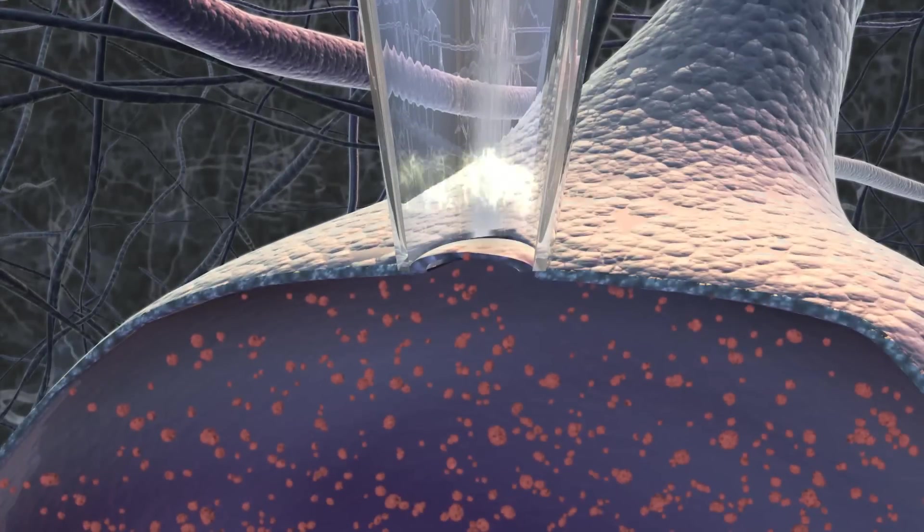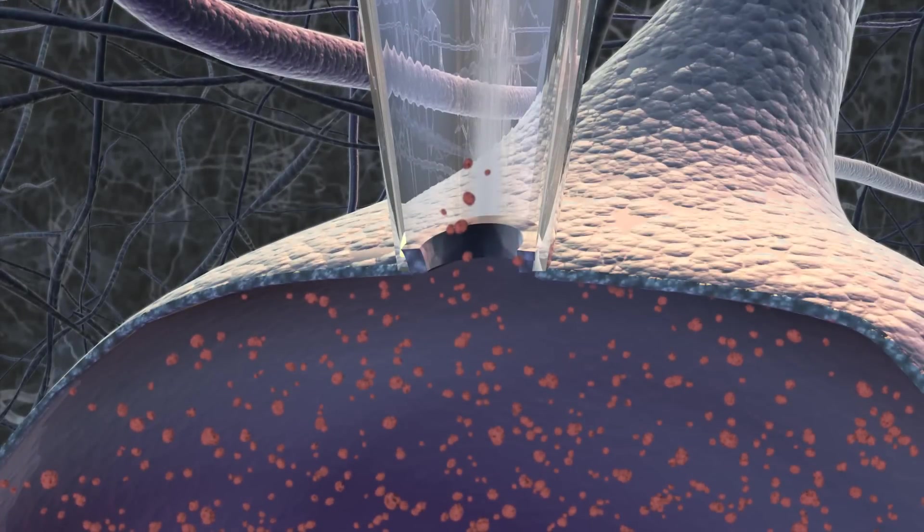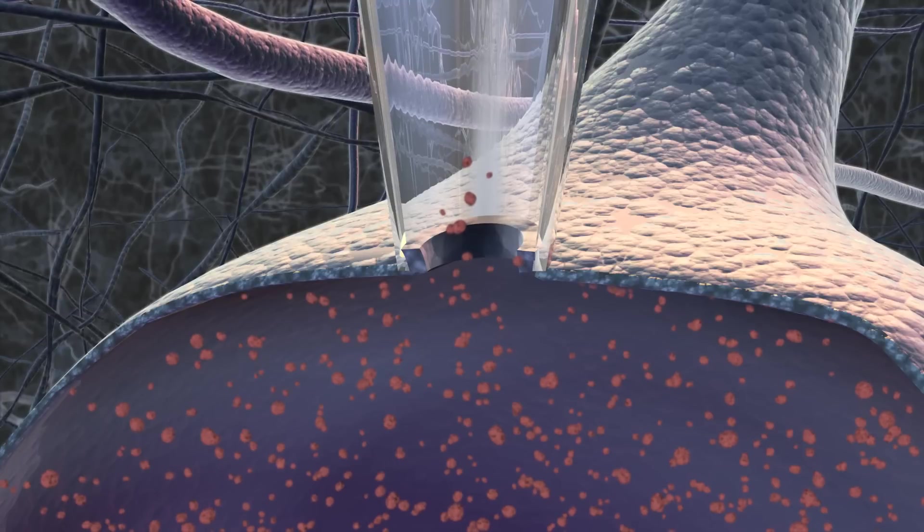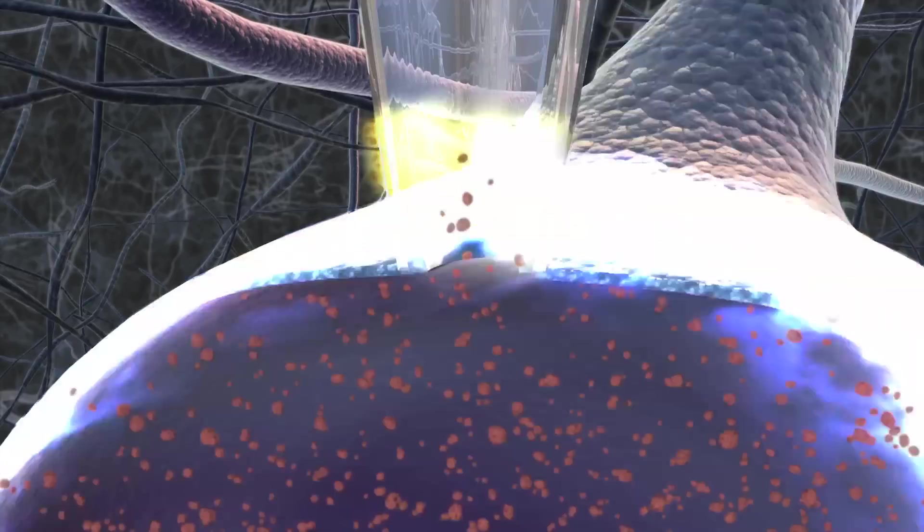Finally, a brief pulse of suction results in the rupturing of the cell membrane, enabling the inside of the cell to be connected to the inside of the pipette. Now, electrical activity within the cell can be recorded with extraordinary precision.